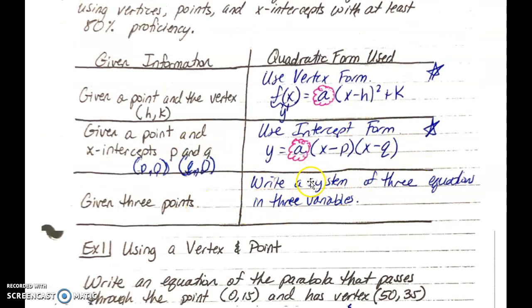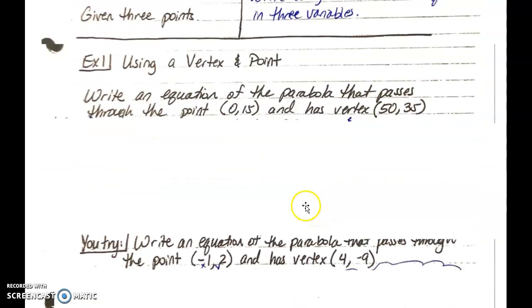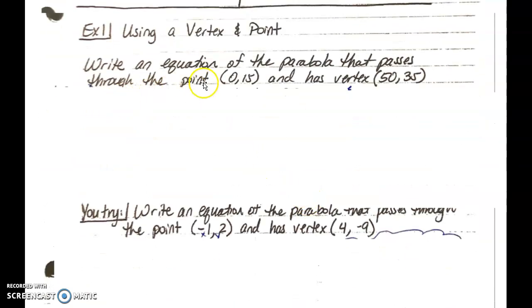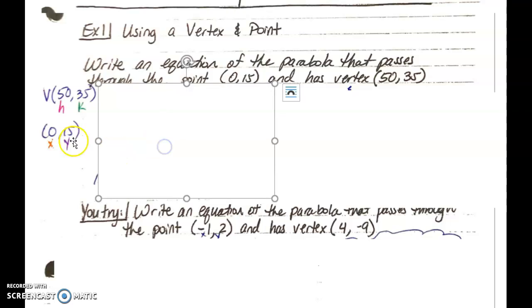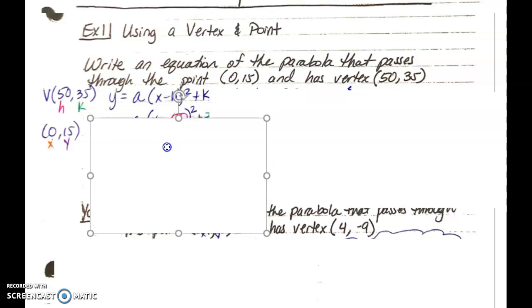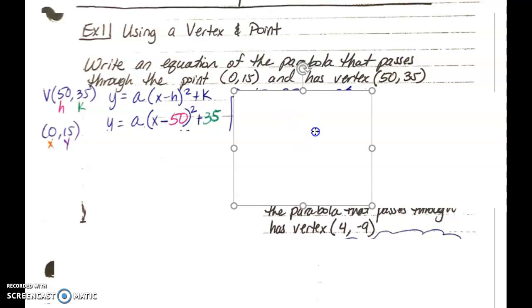So let's take a look at some examples for using a vertex and a point. You can pause to let them copy down if they need any extra time. Let's take a look at our example. We have write an equation of the parabola that passes through the point 0,15 and has the vertex of 50,35. So this is the point on the parabola, 0,15, and our vertex is 50,35.